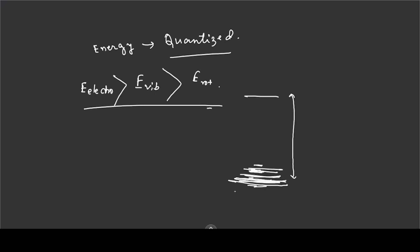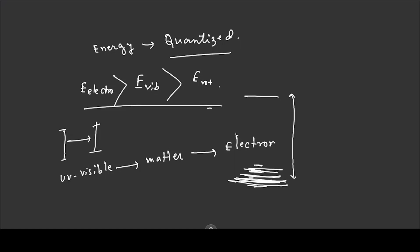I am talking about this energy gap. The light energy gap is going to match the electronic level of this energy gap, so the electronic transition is going to be in the UV-Visible region. This is the electromagnetic spectrum — UV-Visible region — and this is the material undergoing electronic transition, which involves the higher energy level of the electron.